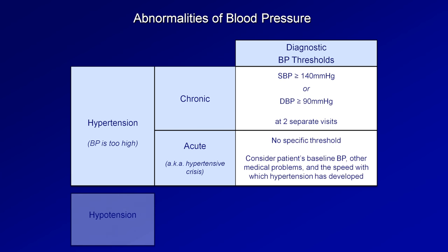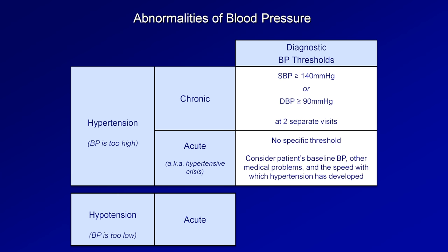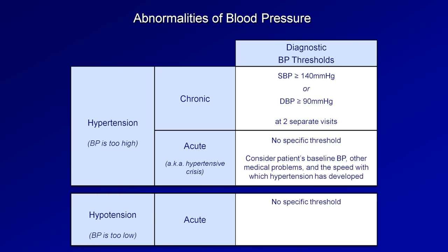On the other hand, hypotension refers to blood pressure that is too low. It is almost always an acute problem. There is no specific cutoff value; rather, categorizing a patient as hypotensive depends on the patient's baseline blood pressure, other medical problems, and on the presence of either symptoms or signs of end-organ dysfunction. Symptoms can include lightheadedness or confusion. Signs of end-organ dysfunction can include low urine output and a variety of abnormal blood tests. Hypotension is also usually a medical emergency, as it can lead to both temporary and permanent damage to any organ in the body rather quickly, and if it progresses, may lead to death.